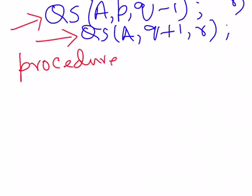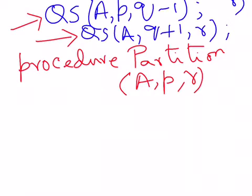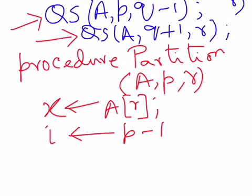The partition procedure takes three parameters again: the array, the starting position, and the end position. What is implicit in the code is that the last parameter r — the end position of the array — is chosen as the pivot. We first copy the pivot element into a variable called x, copying the value at location r. We also use another variable i which is assigned the value p minus one.